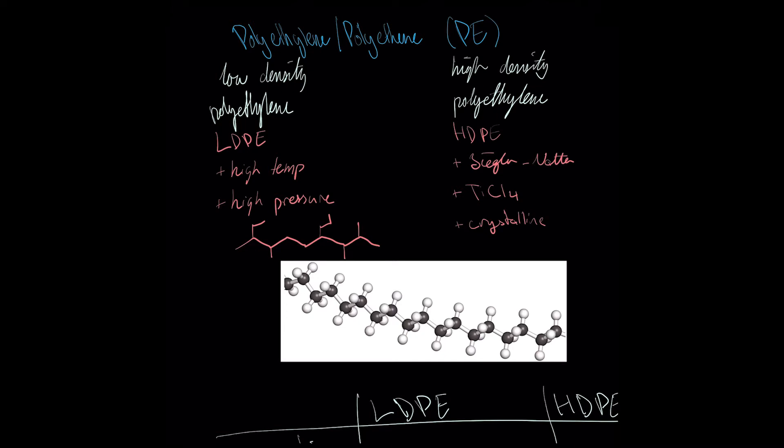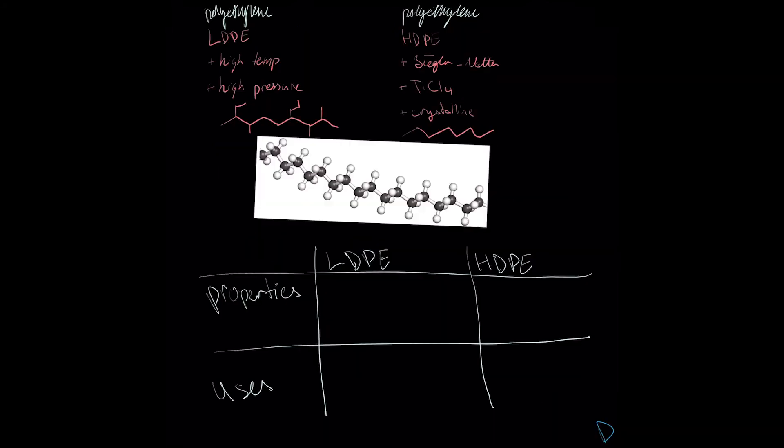Crystallinity is a measure of how structured the polymer is after it is formed. Because HDPE has fewer branches, the polymer molecules can line up alongside each other better, increasing the rigidity and hardness of the polymer. The lack of branching means that molecules can interact more strongly via dispersion forces.